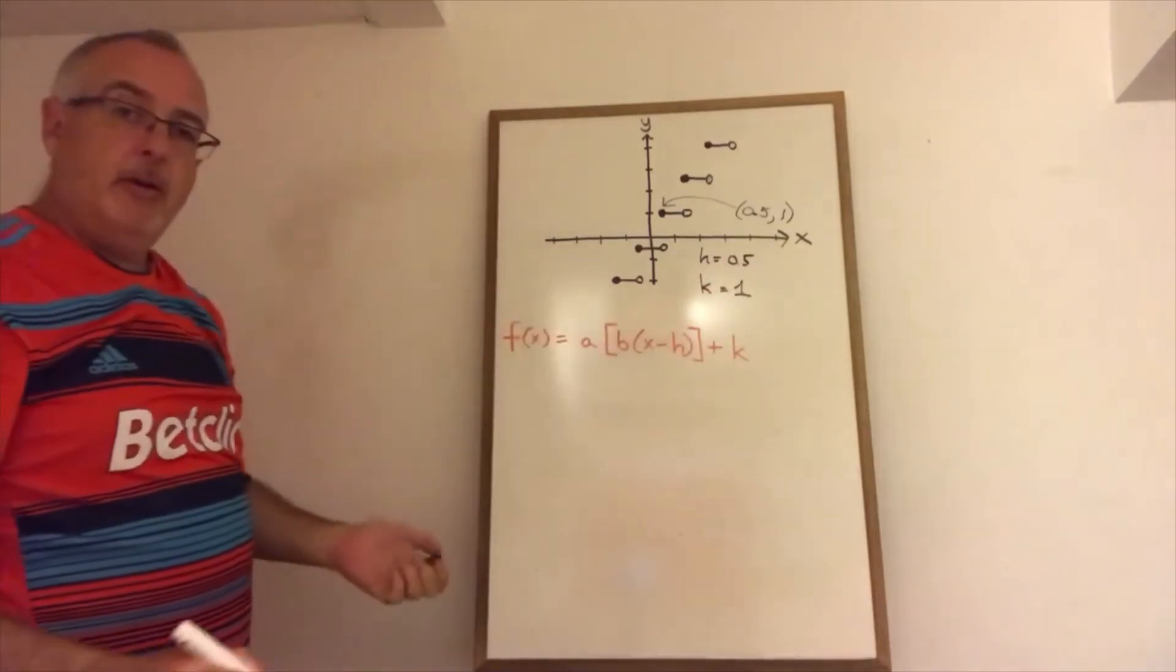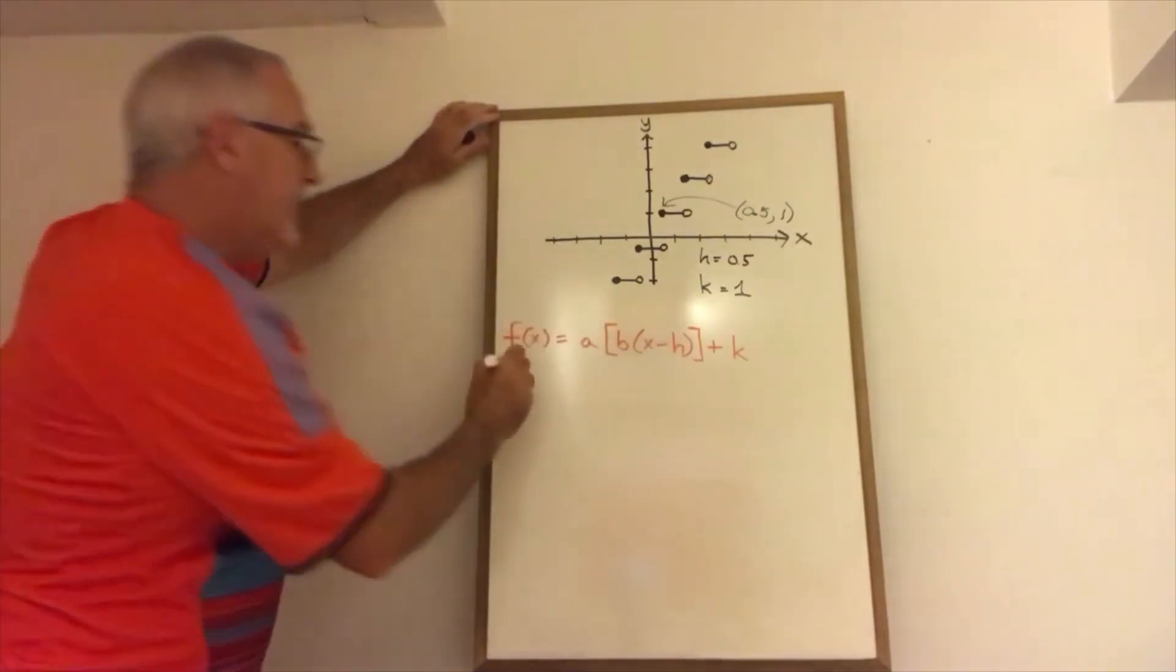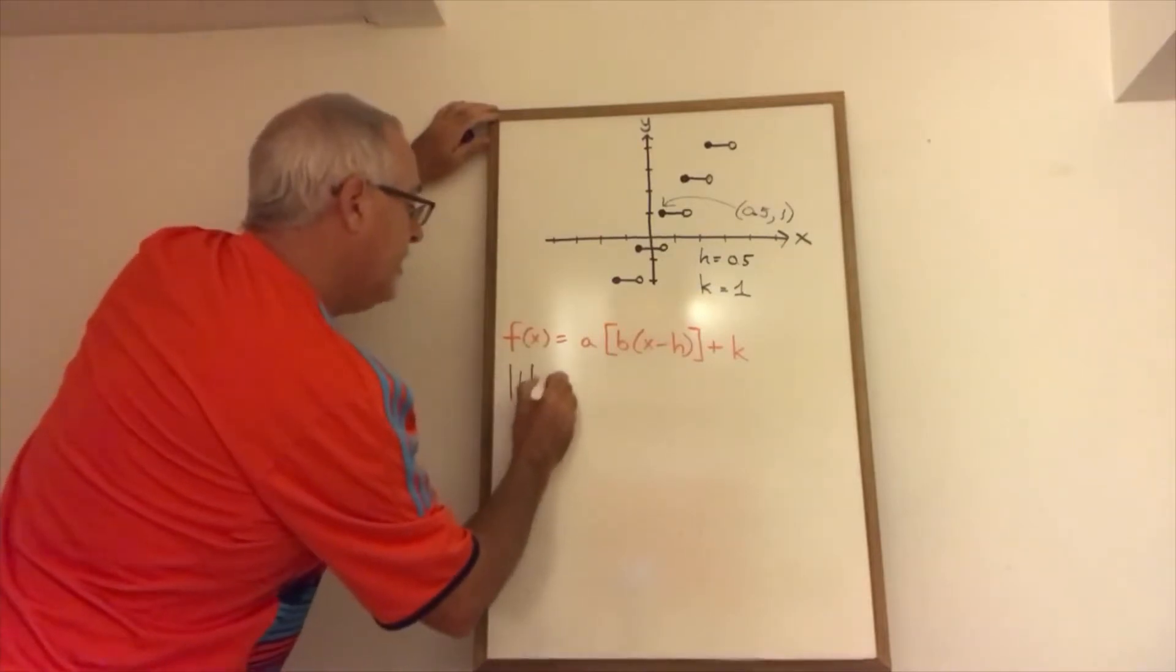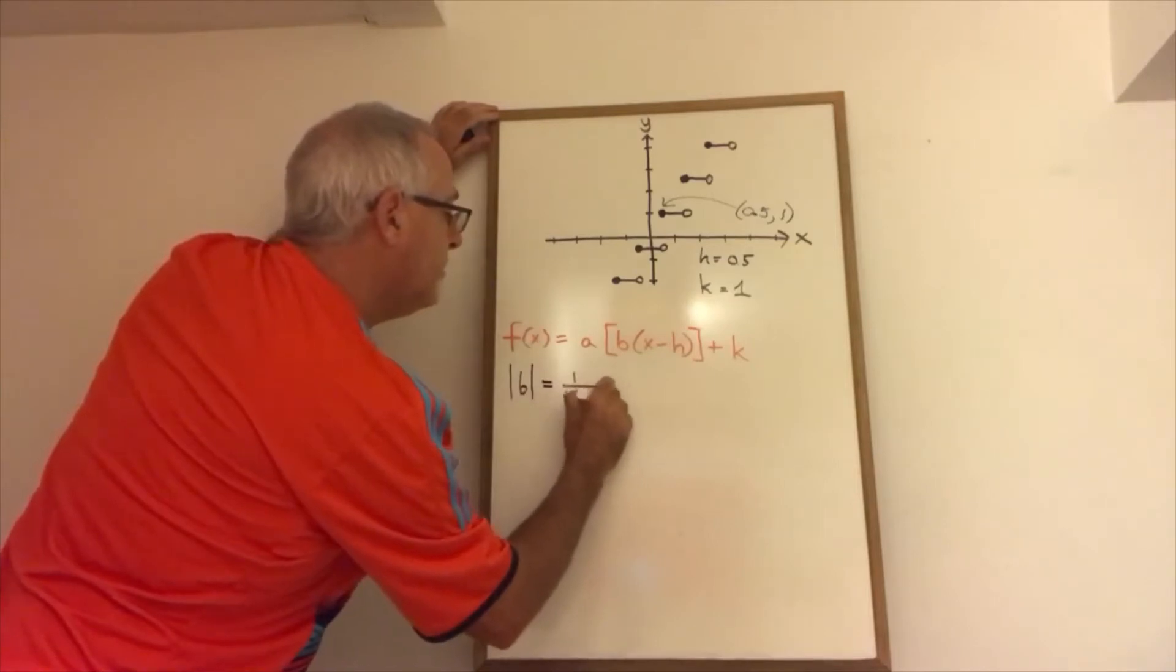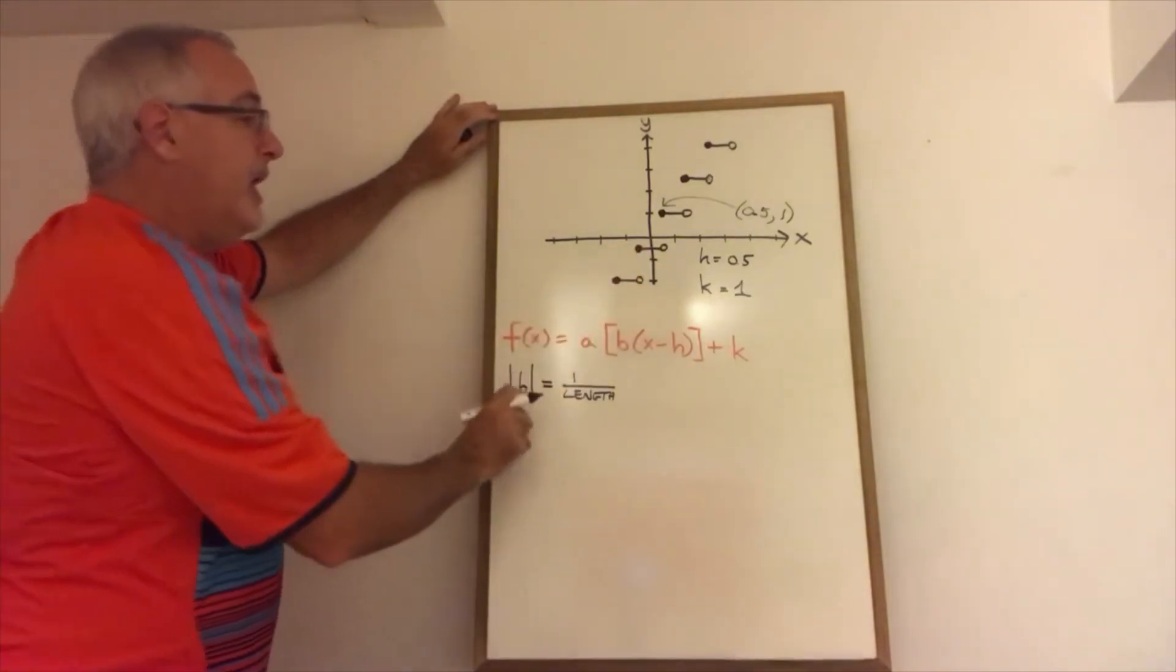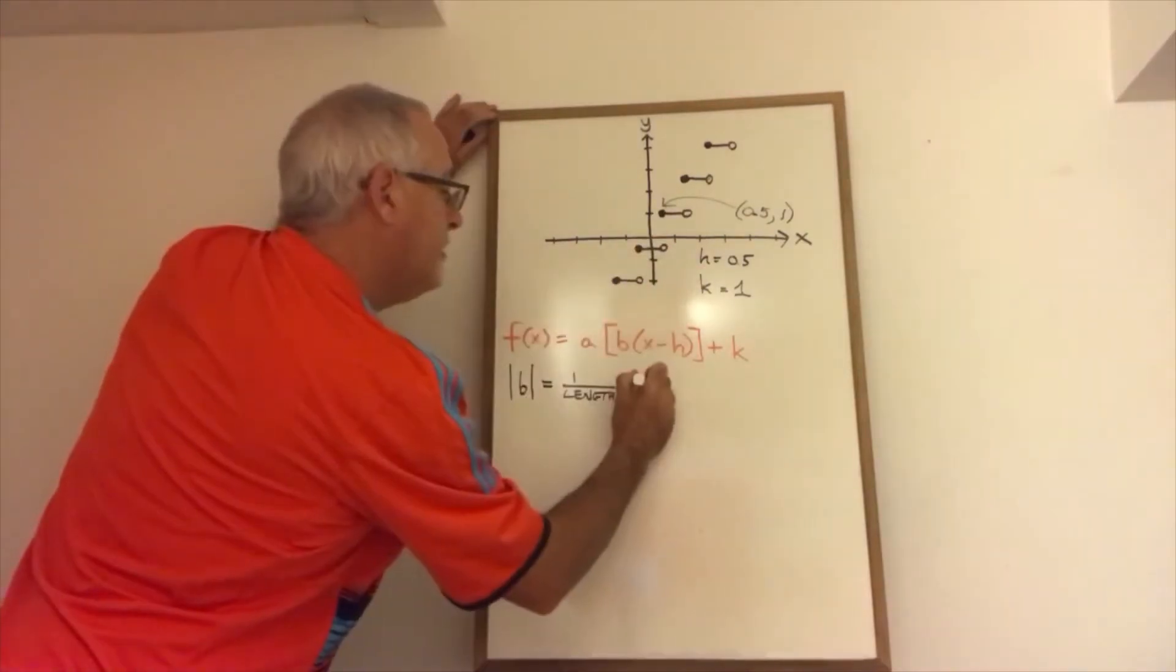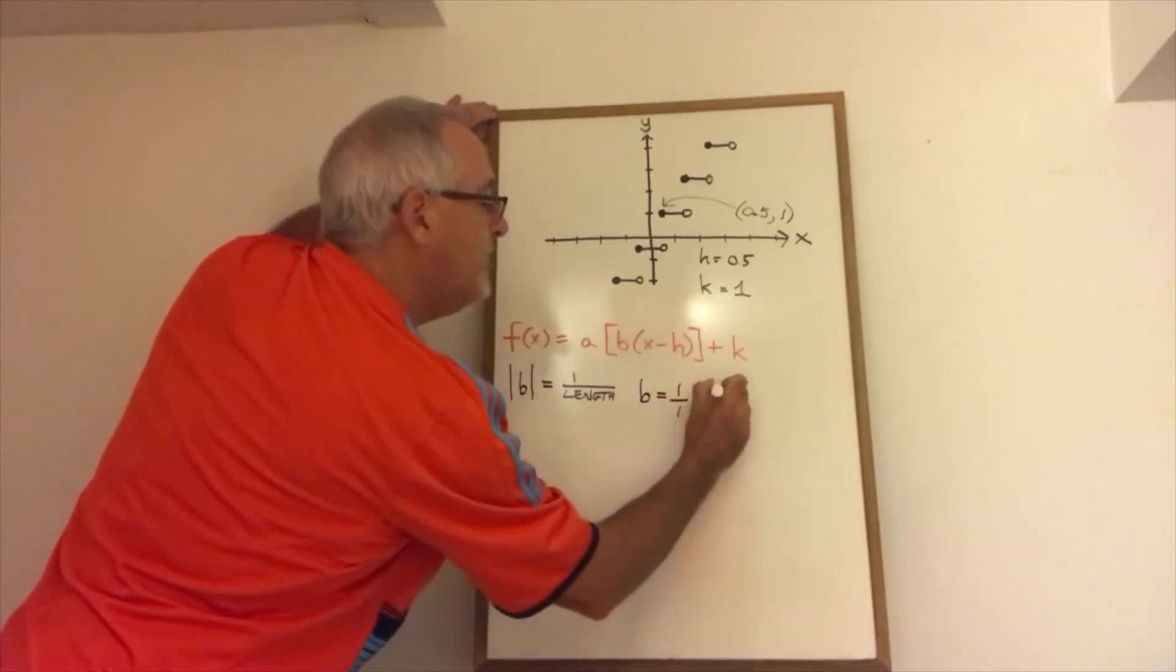We have half of our parameters already. The next thing I want to do is find the sign of b. I know that the absolute value of b gives me 1 over the length of the steps. When the steps have the closed circle on the left, that means that b is positive. And the length of our steps is 1 unit. So b equals positive 1 over 1 or b equals 1.